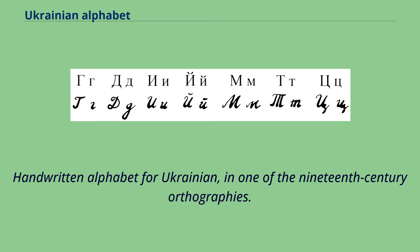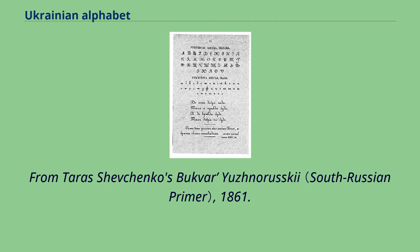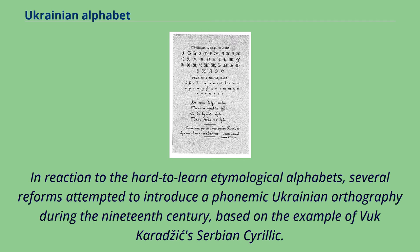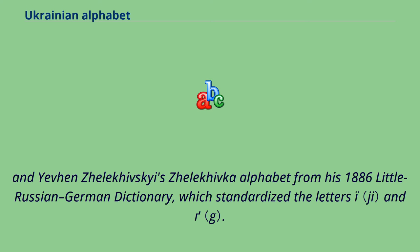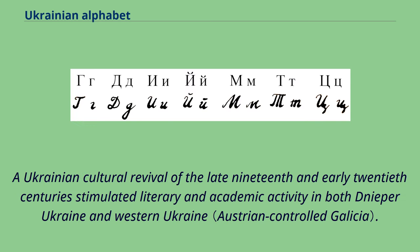In reaction to the hard-to-learn etymological alphabets, several reforms attempted to introduce a phonemic Ukrainian orthography during the 19th century, based on the example of Vuk Karadžić's Serbian Cyrillic. These included Oleksiy Pavlovsky's 1818 grammar of the Little Russian dialect, Panteleimon Kulish's Kulishivka alphabet used in his 1857 Notes on Southern Rus, the Drahomanivka alphabet promoted in the 1870s by Mykhailo Drahomanov, and Yevhen Zhelekhivsky's Zhelikhivka alphabet from his 1886 Little Russian-German dictionary, which standardized several letters.